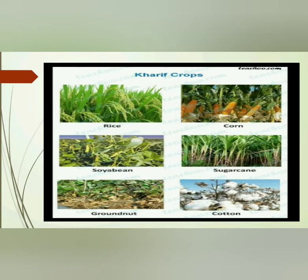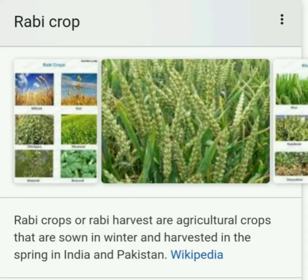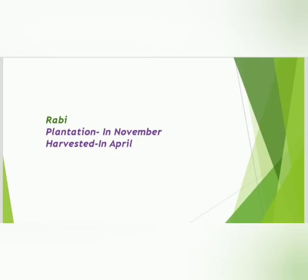Now we will study what are Rabi crops. Rabi crops are agricultural crops which are sown in winter and harvested in the spring in India and Pakistan. These crops are harvested during April and the plantation occurs in November.